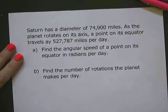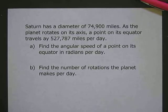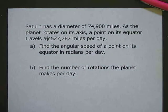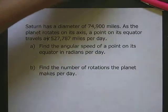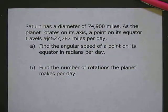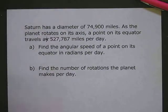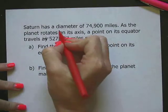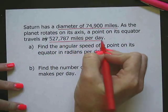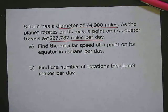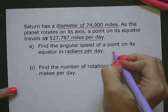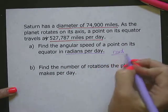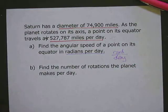Saturn has a diameter of 74,900 miles. As the planet rotates, a point on its equator travels at 527,787 miles per day. Find the angular speed of a point on its equator in radians per day. So the information given is the diameter and the miles per day, and the answer needs radians in the numerator and days in the denominator.